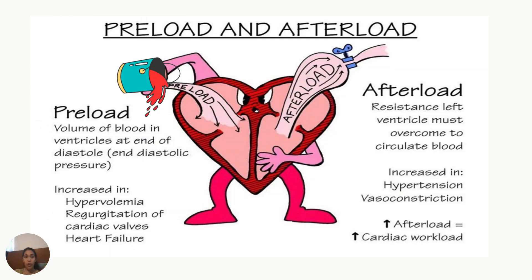Preload is the volume of blood in the ventricles at the end of diastole — at the end of diastolic pressure. Afterload is the resistance the ventricle must overcome to circulate that blood.